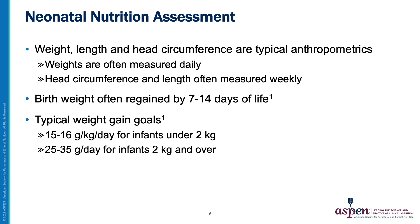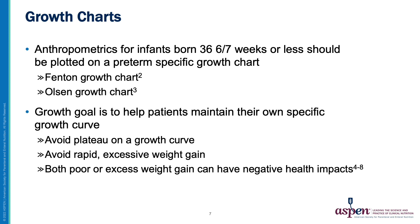Typical weight gain goals for infants are as follows: 15 to 16 grams per kilo per day for infants under 2 kilos, and 25 to 35 grams per day for infants 2 kilos and greater. Plotting anthropometrics on a growth chart is an important tool. For infants born at 36 and 6/7ths weeks or less, a preterm-specific growth chart should be used, such as the Fenton or Olsen growth charts. The goal is to help infants maintain their own specific curve, avoiding plateaus as well as rapid and excessive gains.